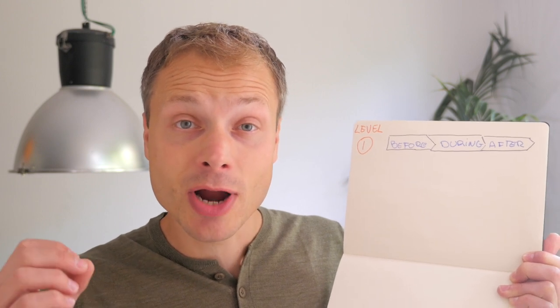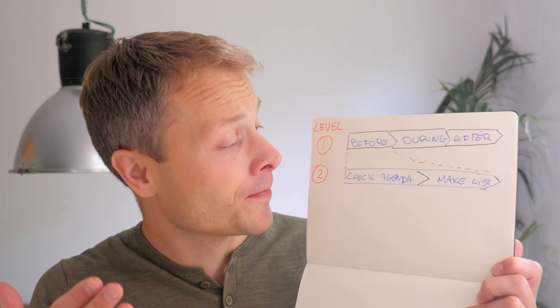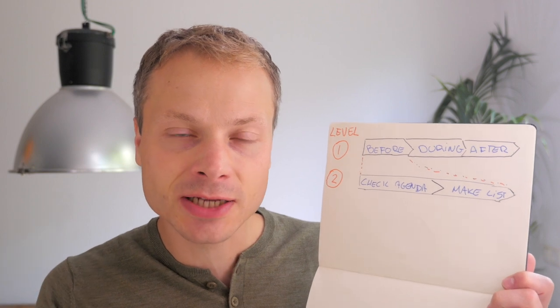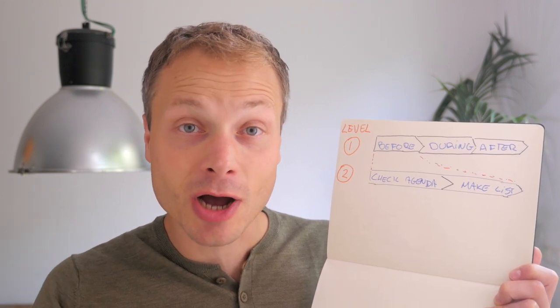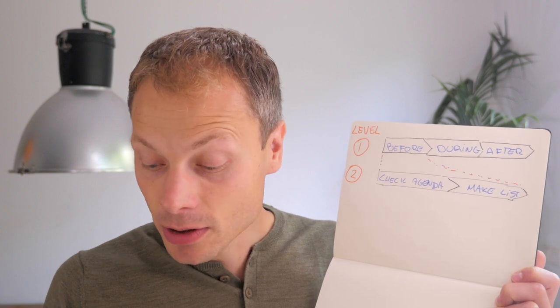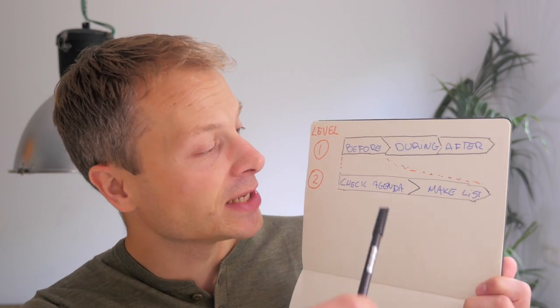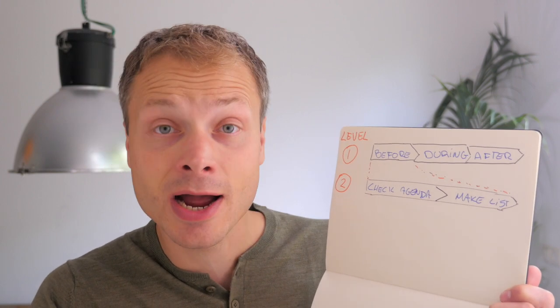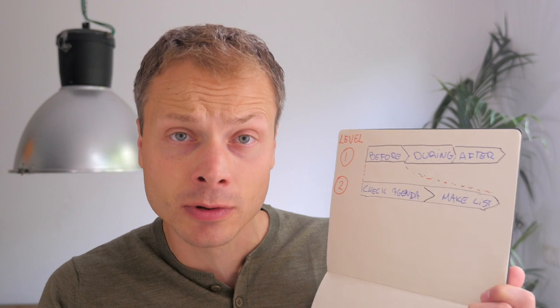Level two is about adding more detail. If we take the 'before' stage of doing groceries, at level two you might break it down into steps like: checking your schedule to see your evening appointments and how many groceries you need, and then making a grocery list. Level two is really dividing the before phase into multiple smaller steps, and you do this also for the during and after phases — it's breaking down level one into smaller bits.